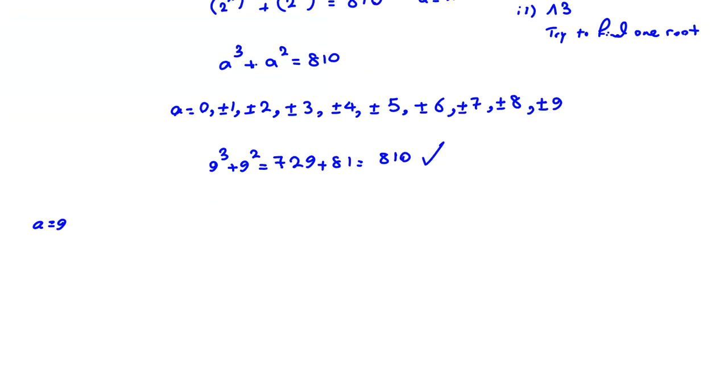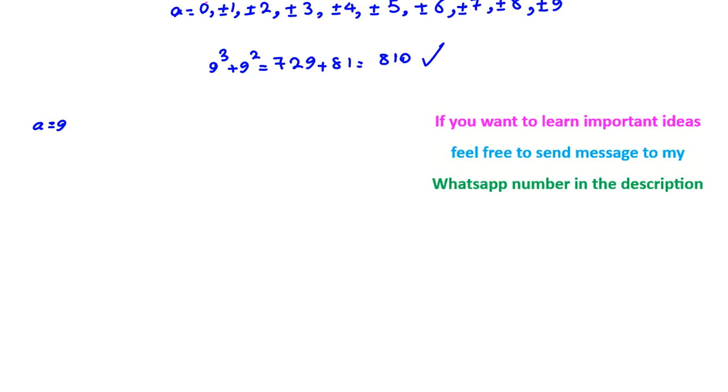Now we want to find other answers. We can factorize. We can take all things to one side: a cubed plus a squared minus 810 is 0. One root is 9. So a minus 9. We place a squared: a cubed minus 9a squared plus 10a squared minus 90 plus 90. It will be 0.